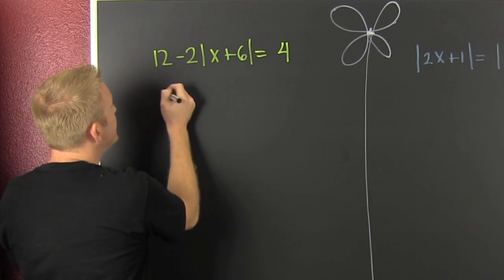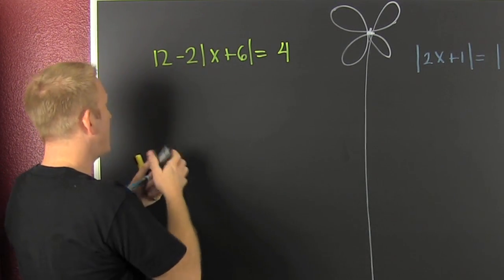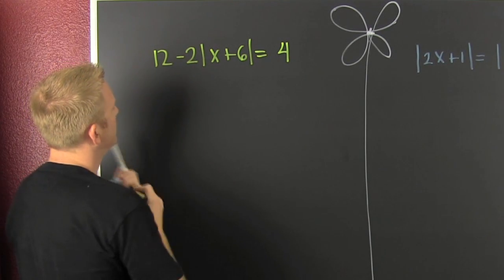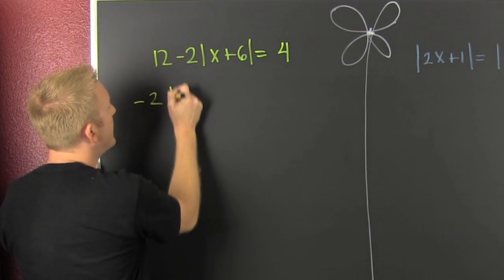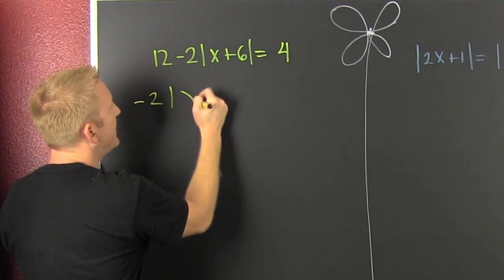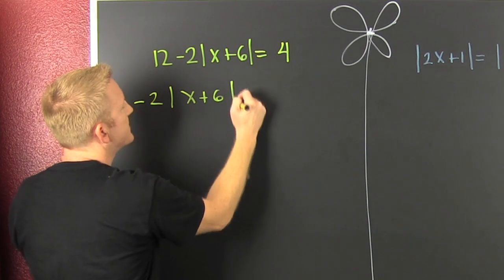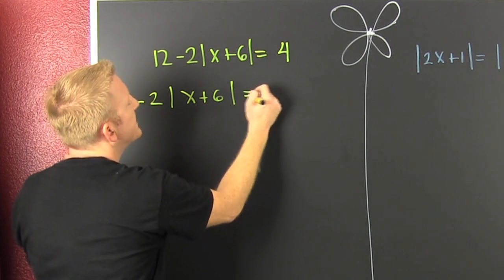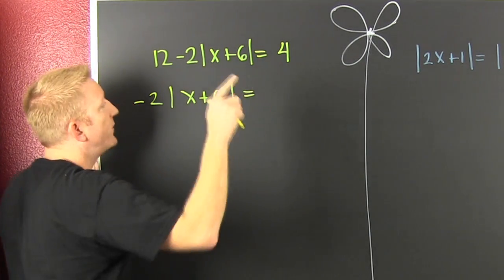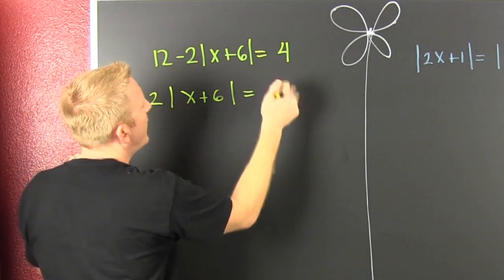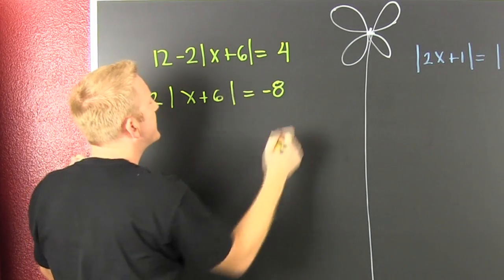So we subtract the 12 off each side, and on the left side I'm left with a minus 2 times the absolute value of x plus 6, and that's going to be equal to 4 minus 12, which is minus 8.